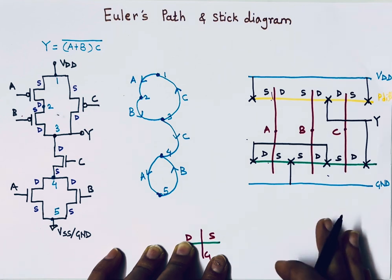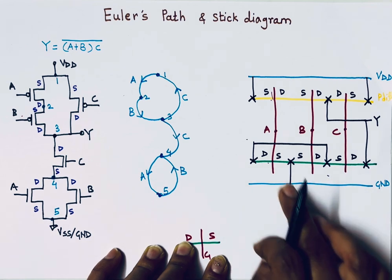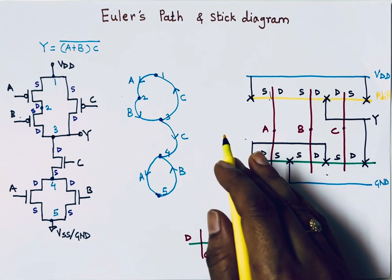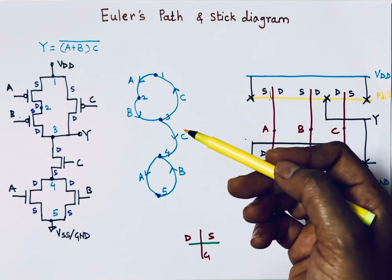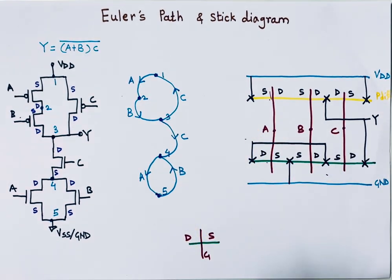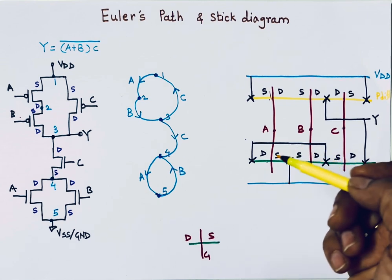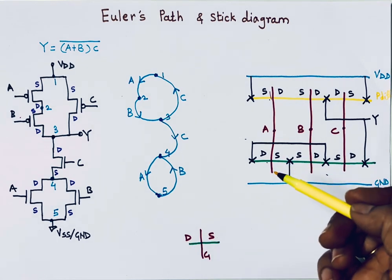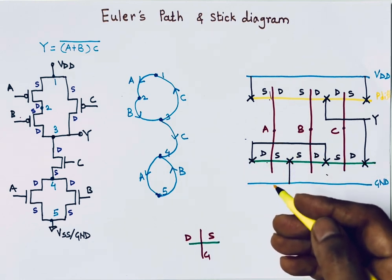In this way we can draw the stick diagram. Inputs A, B, C are shown and output Y is obtained. Euler's path helps place CMOS transistors in a line to save space and make wiring easier — connecting transistors without breaks, making the layout smaller and faster. A stick diagram is a simple drawing showing how parts of a circuit connect, using colored lines for different layers such as metal, poly, and diffusion. It helps plan the layout before making the actual design — like a rough map of the chip's layout.